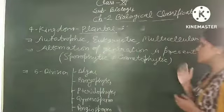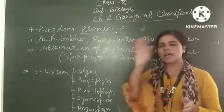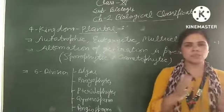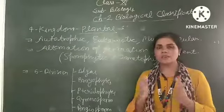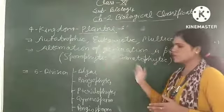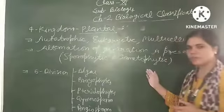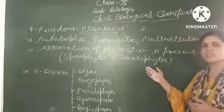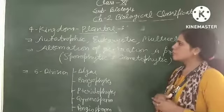Alternation of generation is present. It means that in the life cycle of plants, we see all plants show alternation of generation. It means that in the life cycle, first there is one type of generation present, sporophytic or gametophytic. Sporophytic generation which is diploid in nature and gametophytic generation which is haploid in nature.